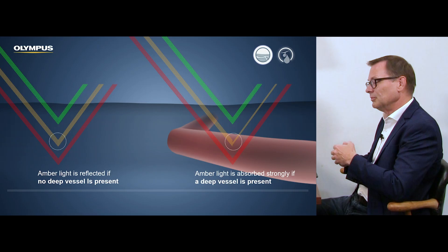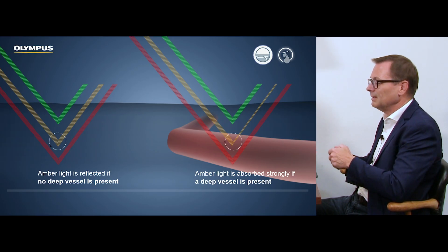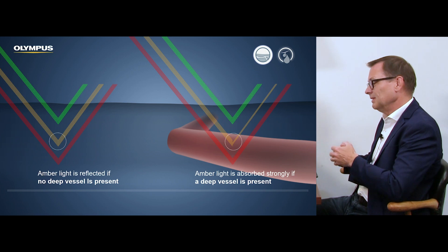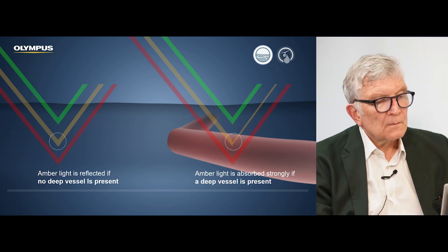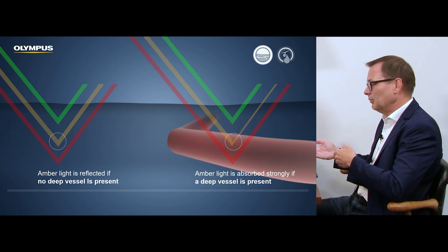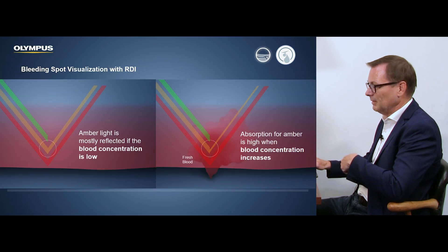On the tissue it would look like this. On the left side you have normal mucosal tissue without any vessels, so all three colors are nicely reflected and you get more or less a representation in white light. On the right side, where you see that the amber color is hitting the larger vessel, it is strongly absorbed, so the reflection is very weak or maybe even not existing, while the red is reflected normally — same as in the mucosal tissue. So we can really identify and increase the contrast where we have blood vessels.